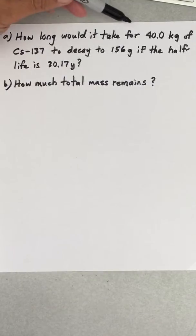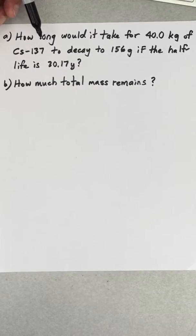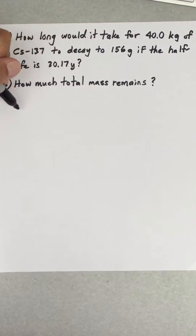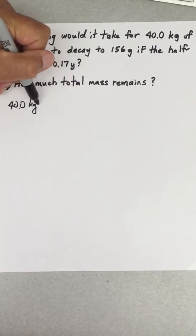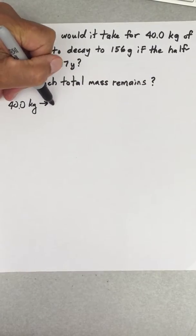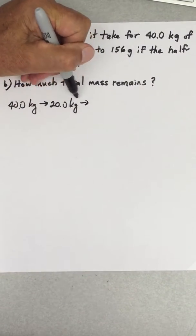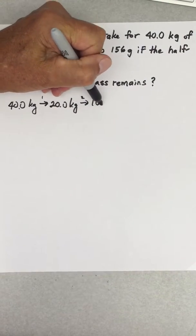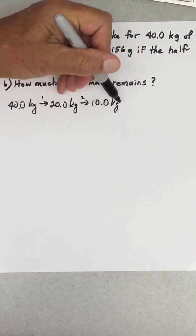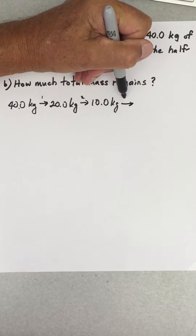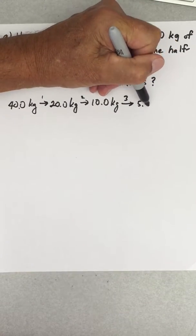Here we're starting out with 40 kilograms. If one half-life goes by, you should have only 20 kilograms left. If another half-life goes by, that would be the second one, then you would have 10 kilograms. You can see every time you cut it in half, that's another half-life.